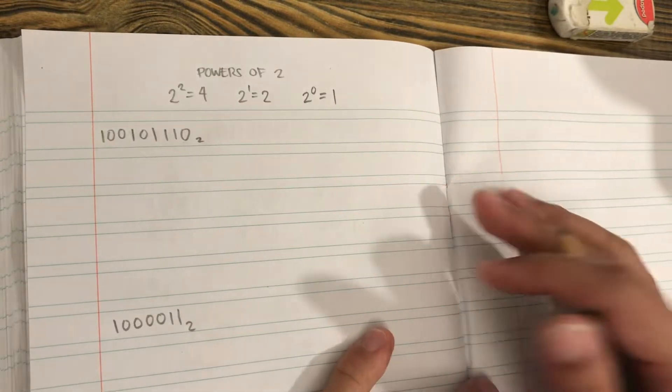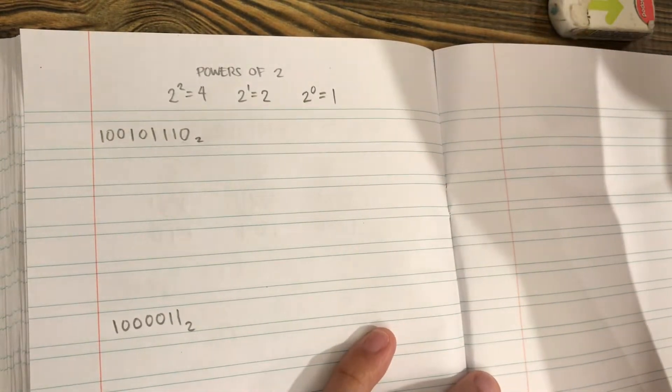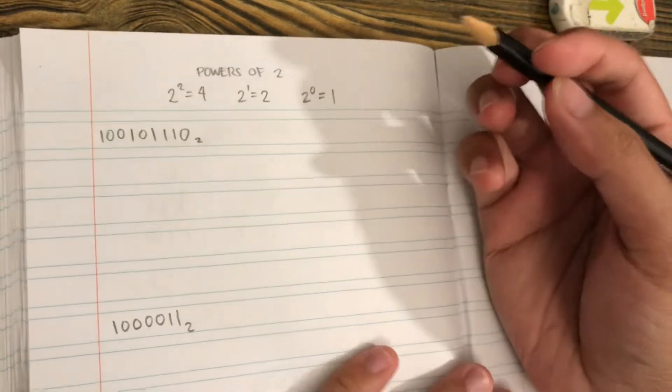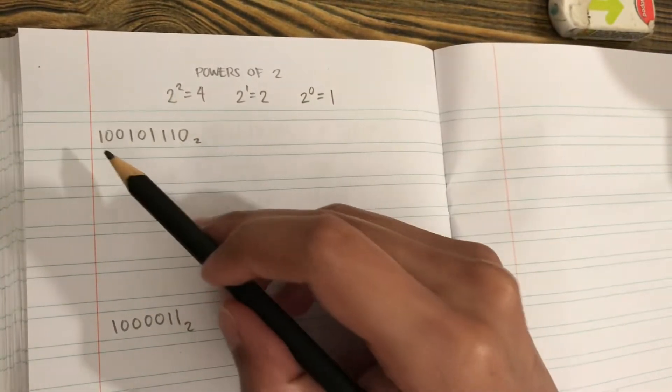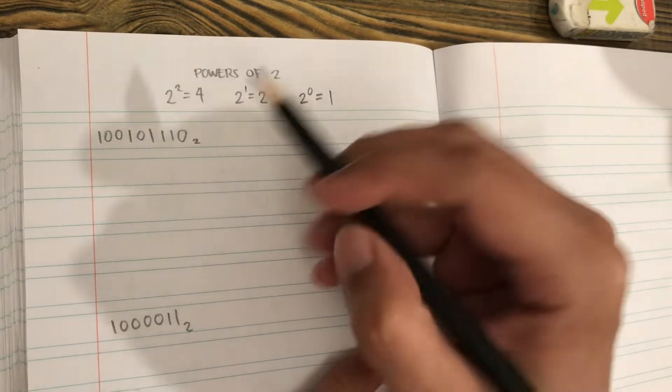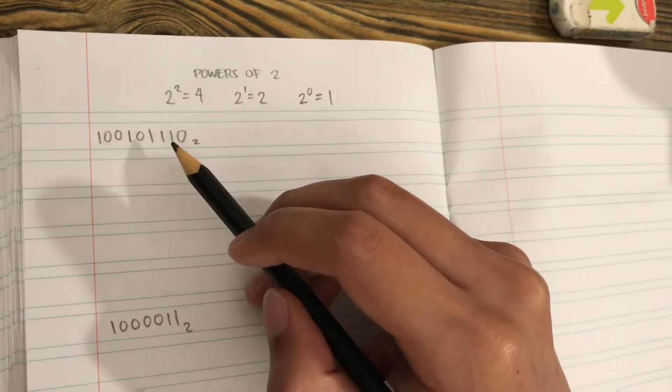Hello Wonderham friends, our video for today is about converting binary numbers to octal and vice versa. Our first example is 10010110. How do we convert this number to octal?